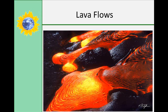Lava flows generated by effusive eruptions vary in shape, thickness, length, and width depending on the type of lava erupted, discharge rate — in other words how fast it comes out of the vent — slope of the ground over which the lava travels, and the duration of the eruption. Although not generally as hazardous as explosive eruptions, lava flows can burn and bury buildings and forests and do pose a danger to people living on or near an active volcano.